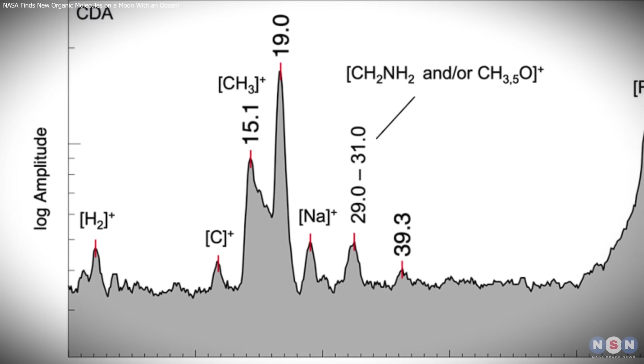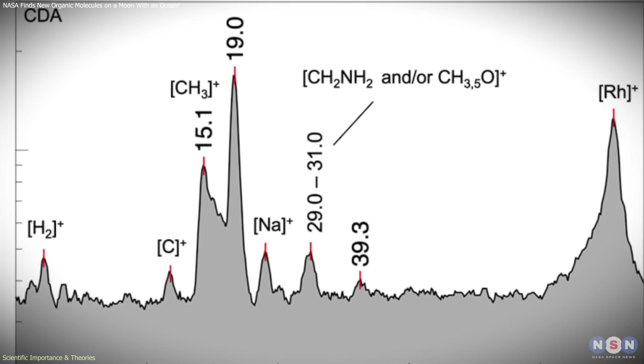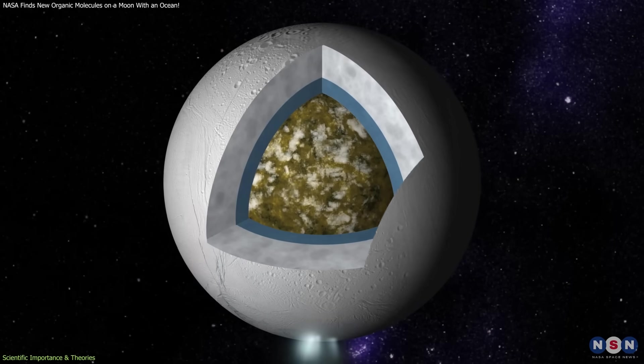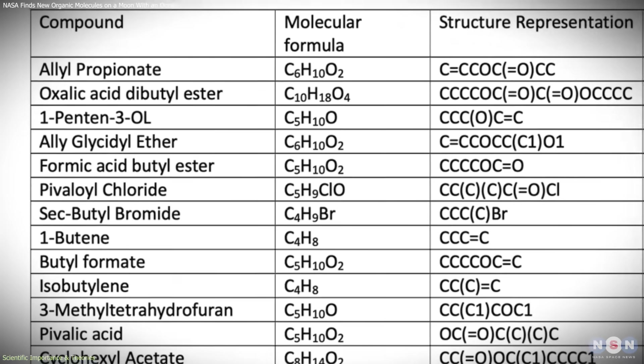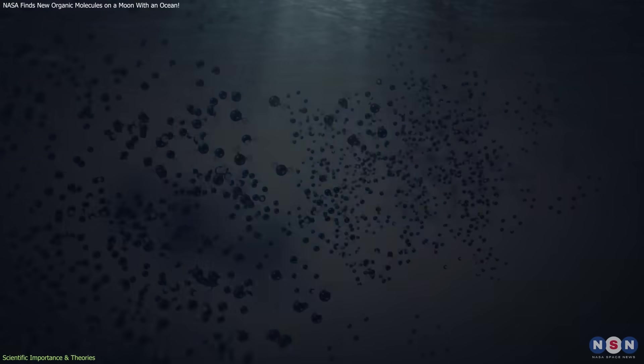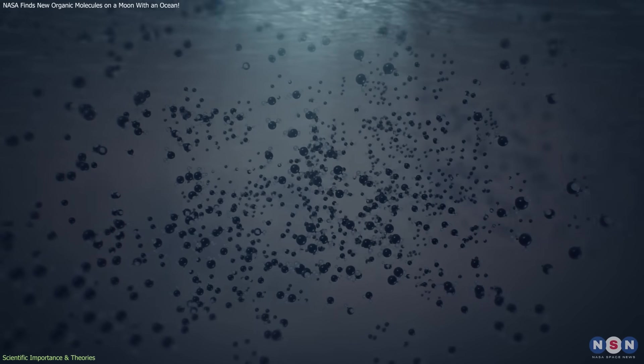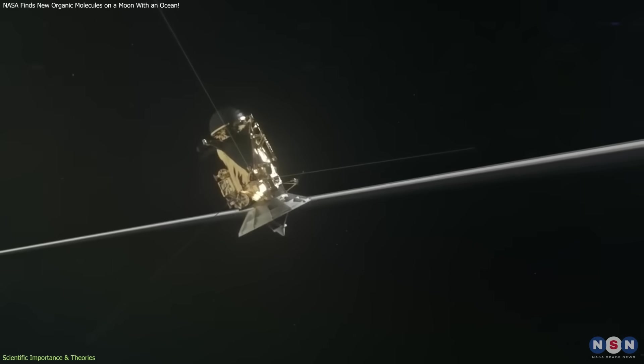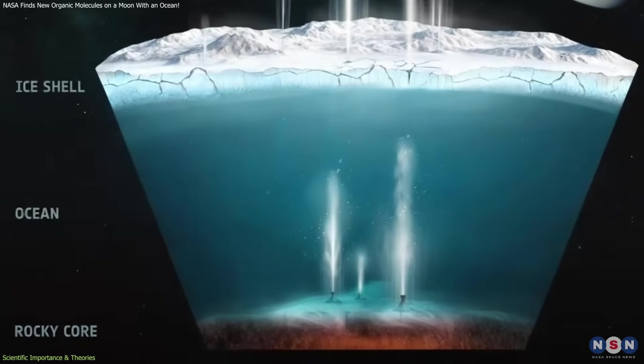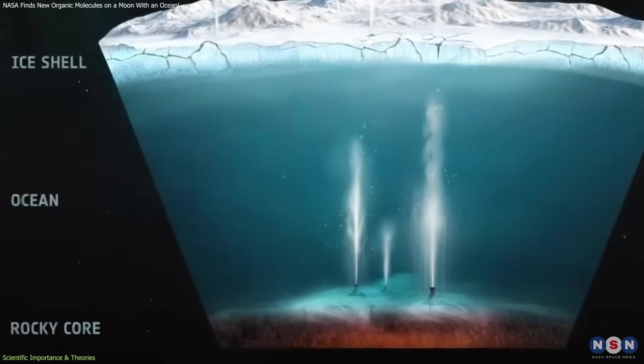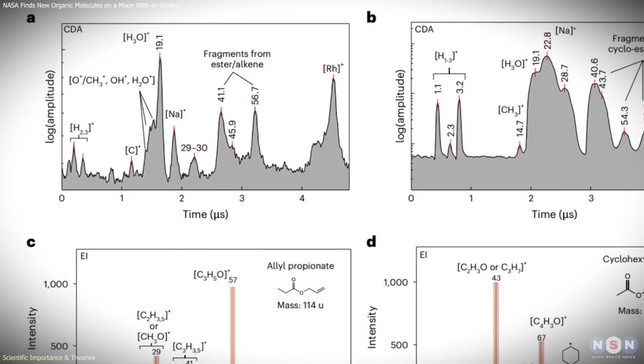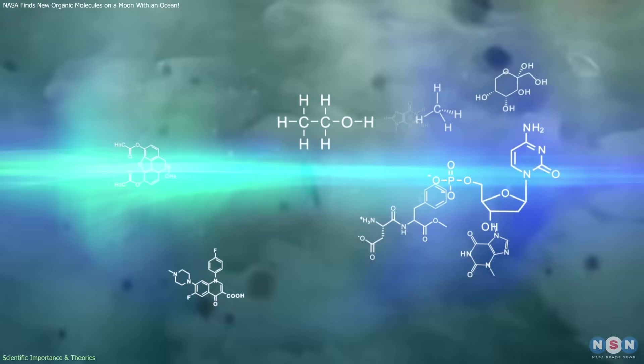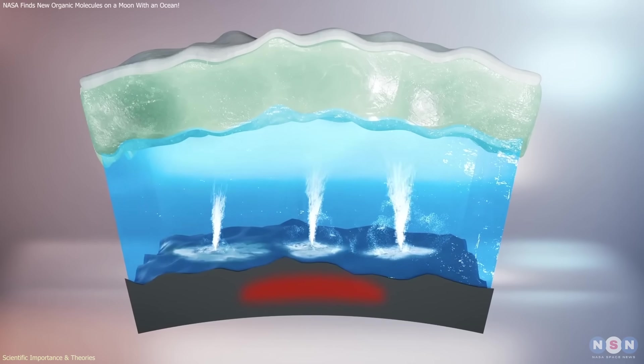The identification of these new organic molecules carries substantial implications for how scientists understand the processes taking place inside Enceladus. On Earth, some of the same molecular families, such as esters and ether-like compounds, can form in environments where water interacts with minerals under varying temperatures. Cassini had previously detected evidence for hydrothermal interactions on Enceladus through the presence of silica-rich particles, suggesting that hot water circulates through rock at the seafloor. The new organic findings are consistent with this model, indicating that the moon's ocean may host chemically diverse zones shaped by thermal and geological gradients.